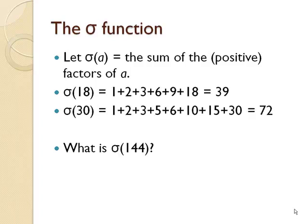Another number theoretic function is the sigma function. Sigma of A is the sum of the positive factors of a number. So, sigma of 18 is the sum of the factors of 18. 1 plus 2 plus 3 plus 6 plus 9 plus 18 equals 39. Sigma of 30 is the sum of those 8 factors of 30, which is 72. What is sigma of 144?